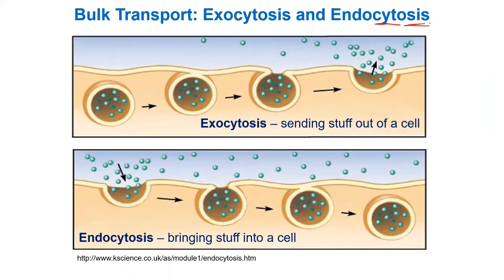Notice what is going on here: this involves reshaping the membrane. We're taking things outside of the cell by forming a membrane pocket around it, which can also be called a vesicle. In order to get it out, the membrane vesicle fuses with the plasma membrane and basically spits out the contents.